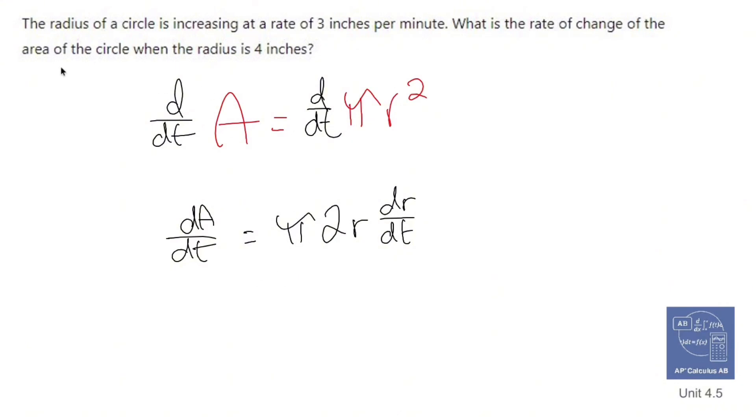So what do I know? I know that the, oh, what is the rate of change of the area when the radius is 4 inches, but also the radius of the circle is changing at 3 inches per minute. Alright. So the radius is 4.